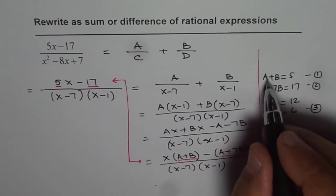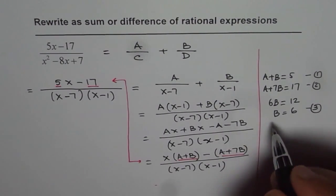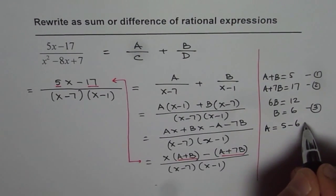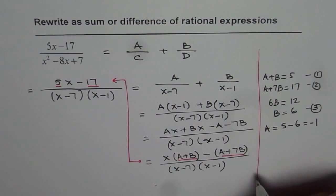Now if b is 6, what is a? Since a plus b is 5, so we have a equals to 5 minus 6, which is minus 1. So we get a as minus 1.